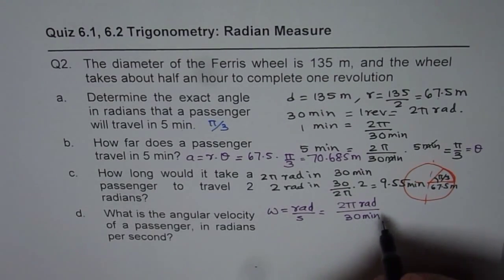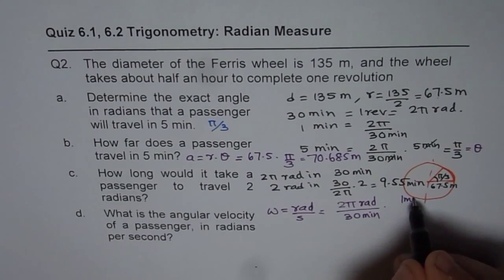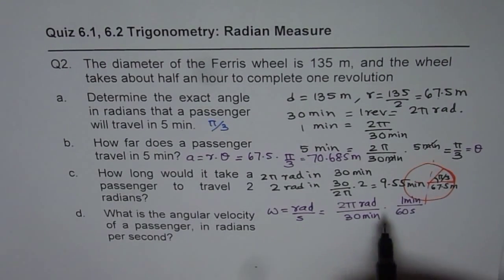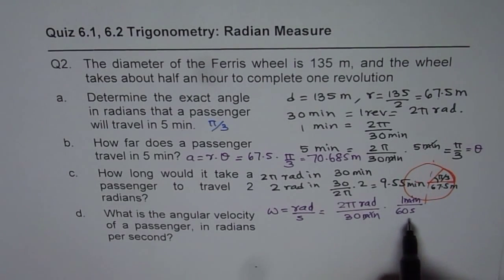So basically, let's convert the units. 1 minute is equal to 60 seconds. Now minute and minute cancel. We have radians per second.